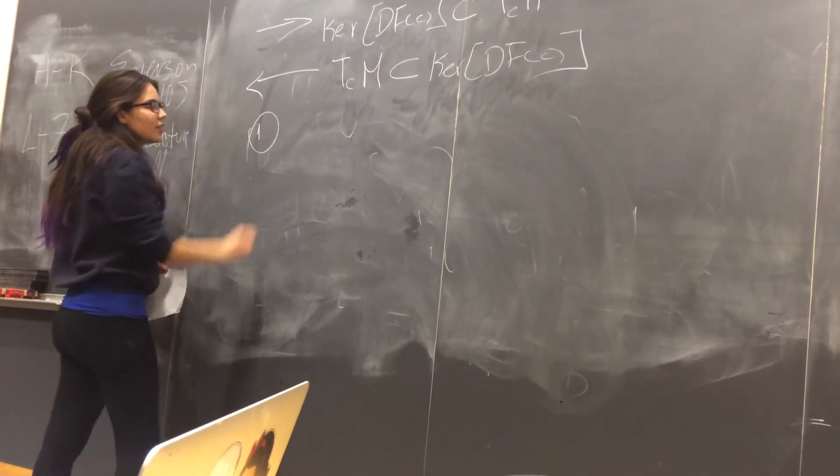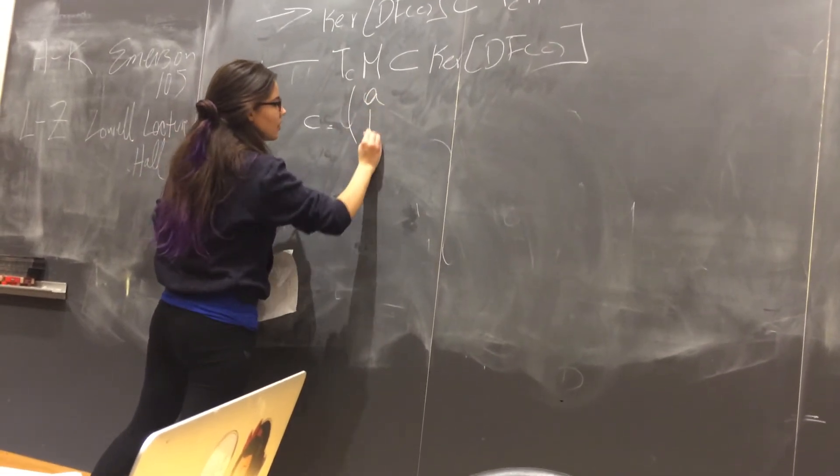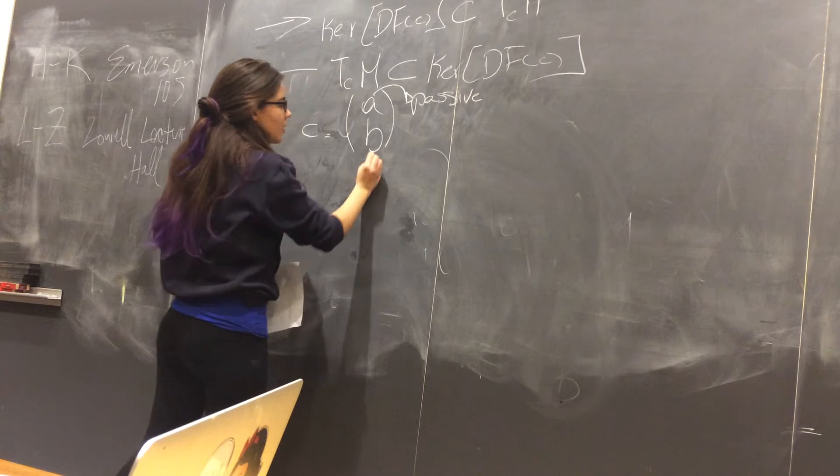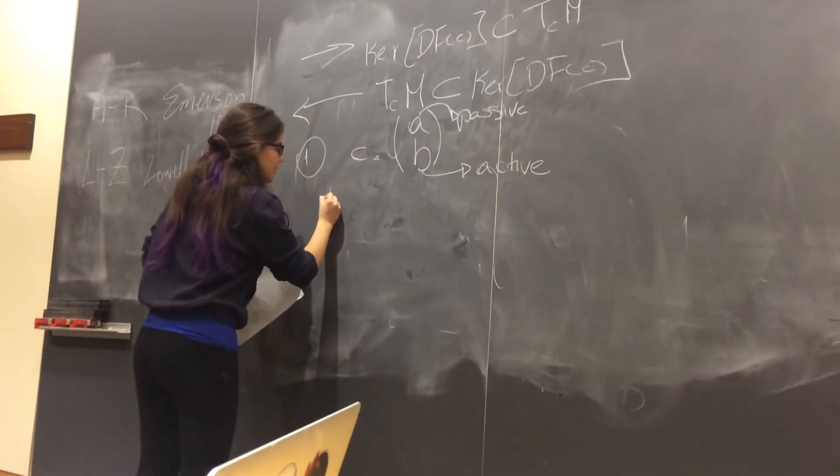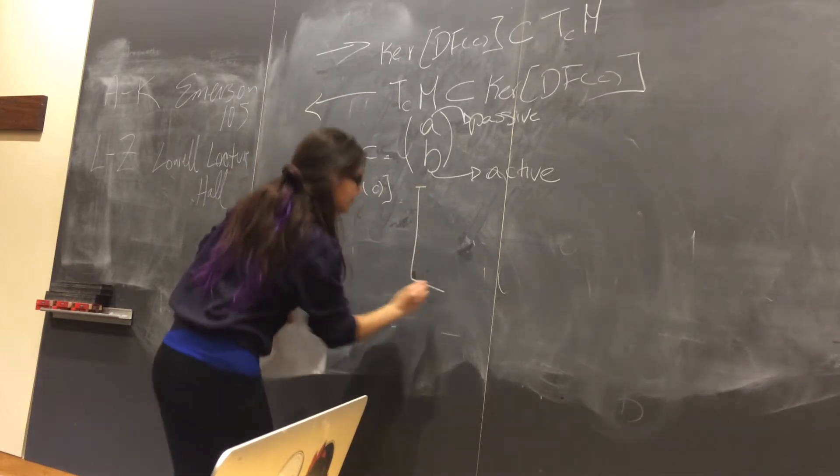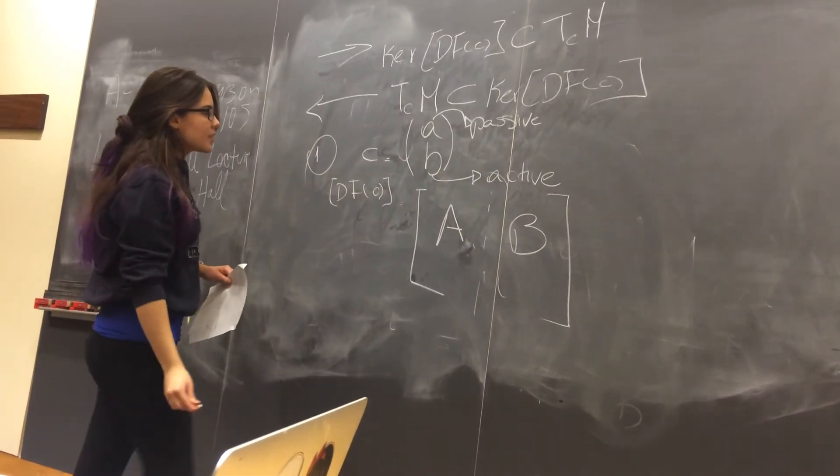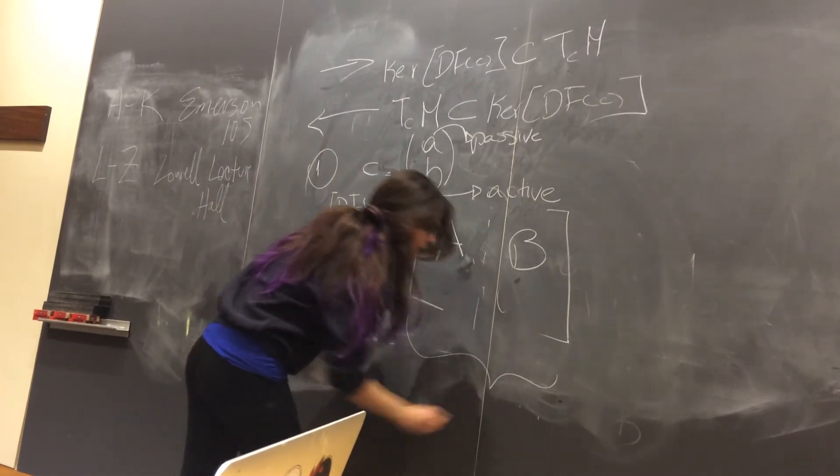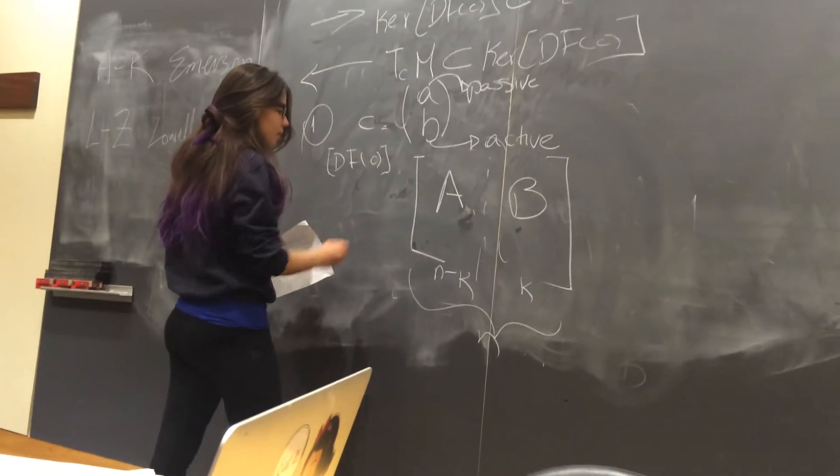First we have a preparation in which we define C in R^N equals A and B, where A is our passive variables and B our active variables. Then we say that DFC is going to be a matrix, of course, A and B. When we row reduce this matrix, this is going to be referring to our passive variables and these are active variables. And we know that this is N, so this is going to be N minus K because it's onto, and this is going to be K.